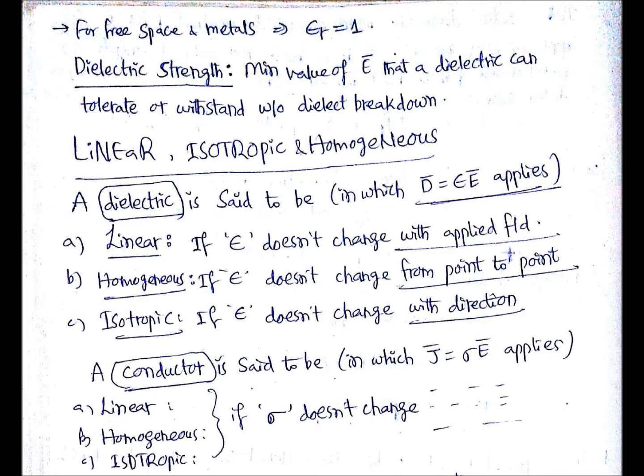Coming to the actual topic, a dielectric is said to be linear in the sense in which D equals epsilon E applies. That means not epsilon-naught E, so D equals epsilon E should apply in that material. In that case, it is said to be linear.